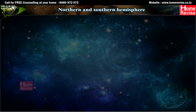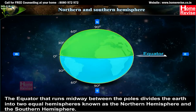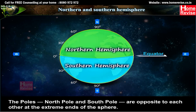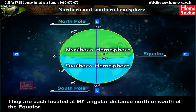Northern and Southern Hemisphere: The equator, running midway between the poles, divides the earth into two equal hemispheres — the Northern Hemisphere and the Southern Hemisphere. The North Pole and South Pole are opposite each other at the extreme ends of the sphere, each located at a 90-degree angular distance north or south of the equator.